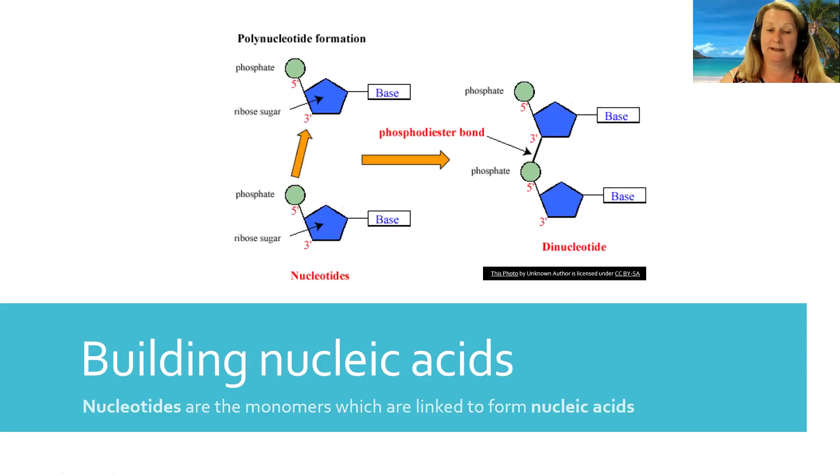Next, we have nucleic acids. And nucleic acids also use dehydration synthesis. You take a hydrogen off of one monomer, an OH off the other one, and together they make water. Here you're showing two nucleotides joining to form the beginning of a nucleic acid or a dinucleotide. So let's go on.